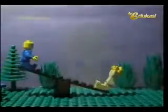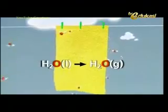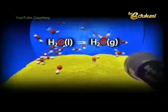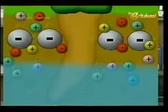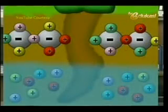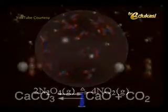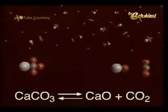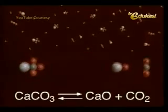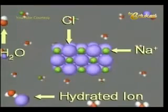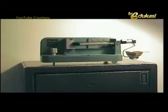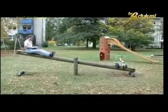Ini yang mungkin kita bisa lihat bersama-sama. Reaksinya harus reversible, berarti bolak-balik, dua arah — maju dan balik. Jadi kalau satu arah tidak termasuk ke dalam materi kesetimbangan. Jadi artinya kata kunci yang kita bisa ambil adalah kesetimbangan itu mempunyai reaksi reversible atau dua arah.